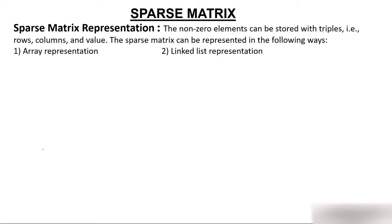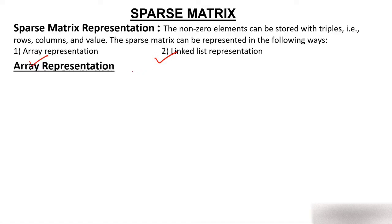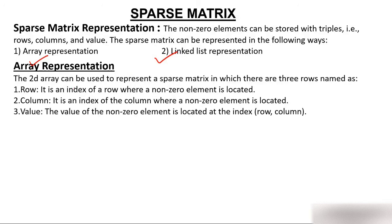Let's move to sparse matrix representation — how to represent a sparse matrix. A sparse matrix can be represented in two ways: one using an array, and one using a linked list. Let's start with array representation. While using an array, we use three factors: row, column, and value.